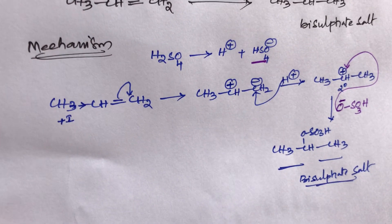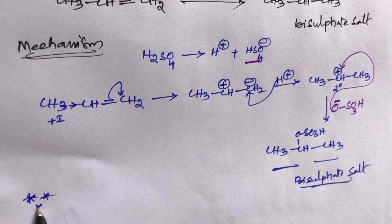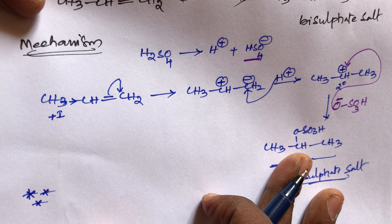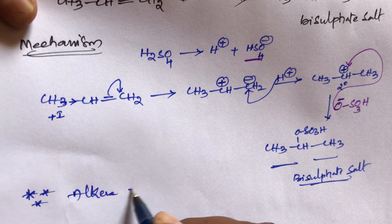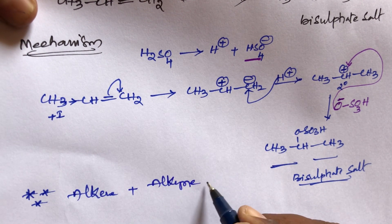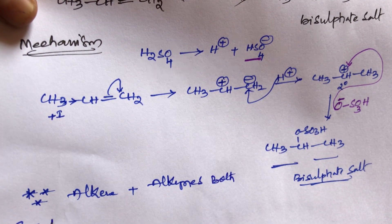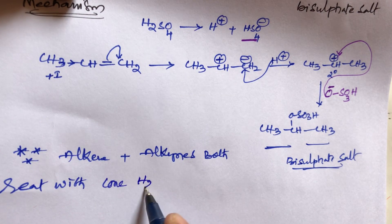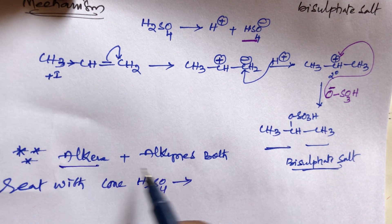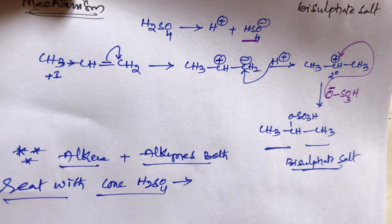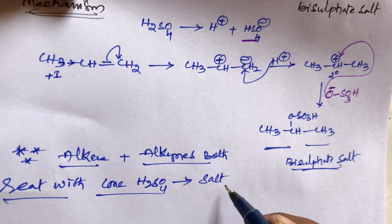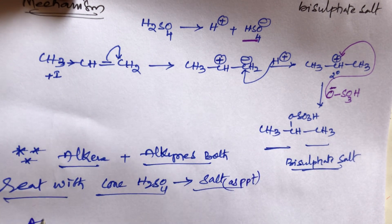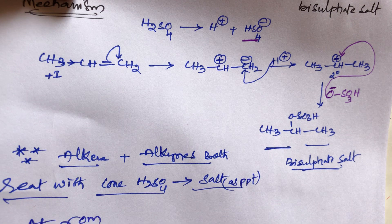Some important points: at room temperature, both alkenes and alkynes react with concentrated H₂SO₄ to form a salt precipitate (PPT). This is very important to remember — unsaturated hydrocarbons (alkenes and alkynes) both react with concentrated H₂SO₄ to form a salt precipitate.